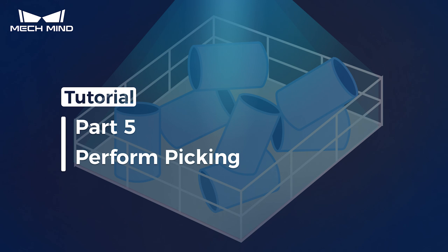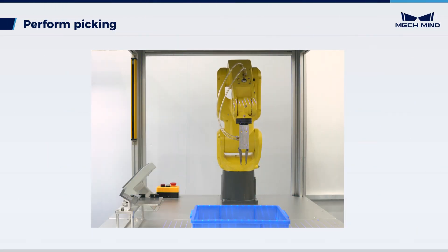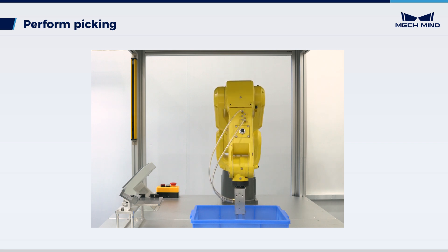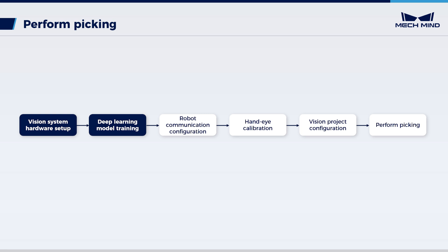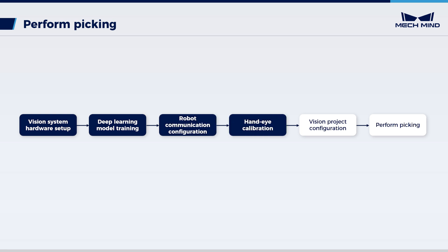This video introduces how to execute a pick-and-place process for randomly stacked bolts. Up to now, we have finished vision system hardware setup, deep learning model training, robot communication configuration, and hand-eye calibration. The configuration of the vision project has also been completed in MechVision.